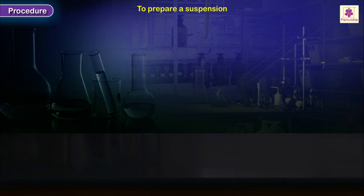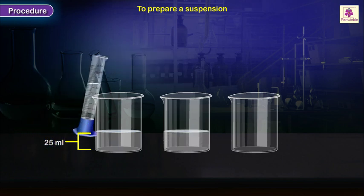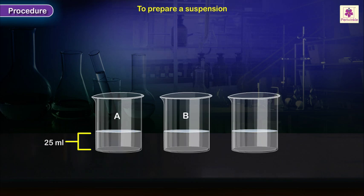Procedure: Take three clean beakers with 25 ml of water in each. Label them as A, B, and C.